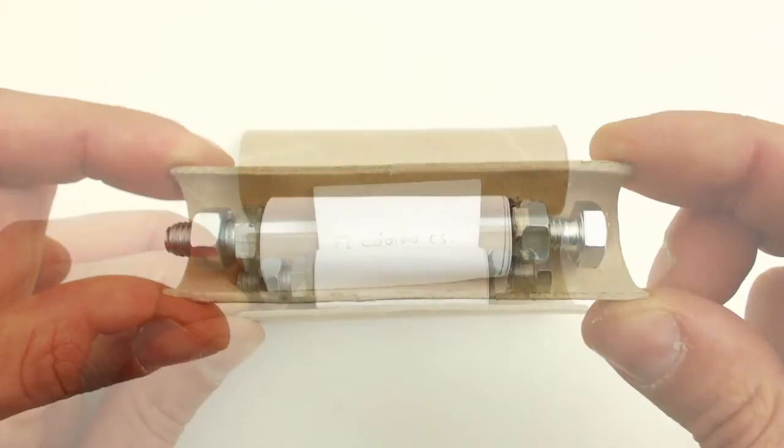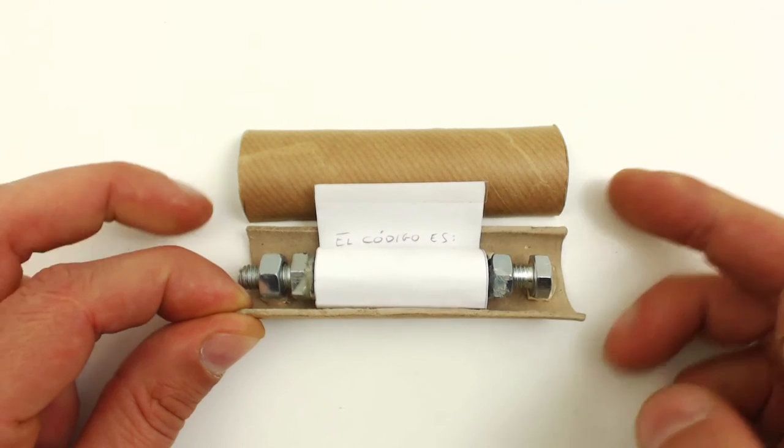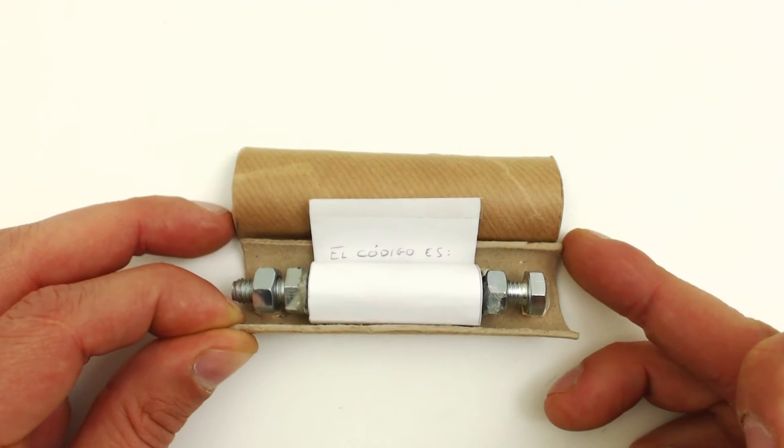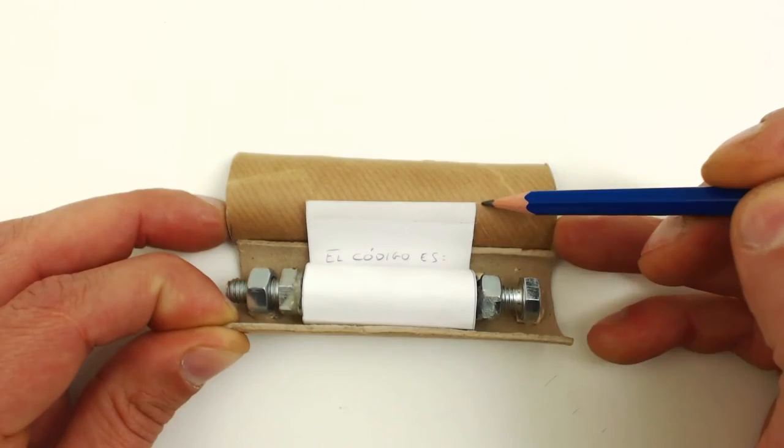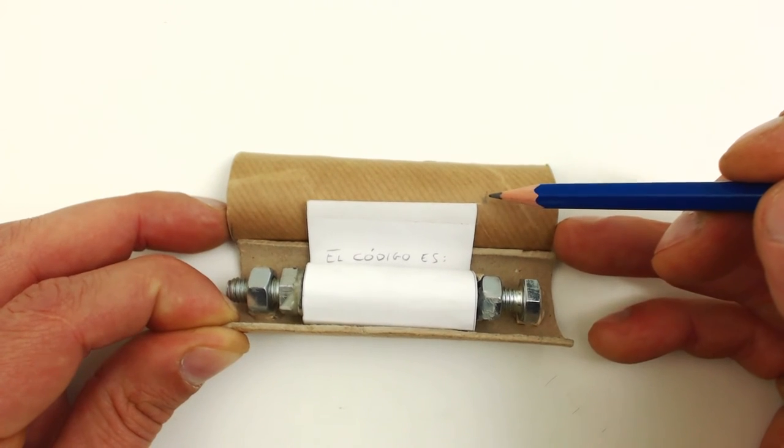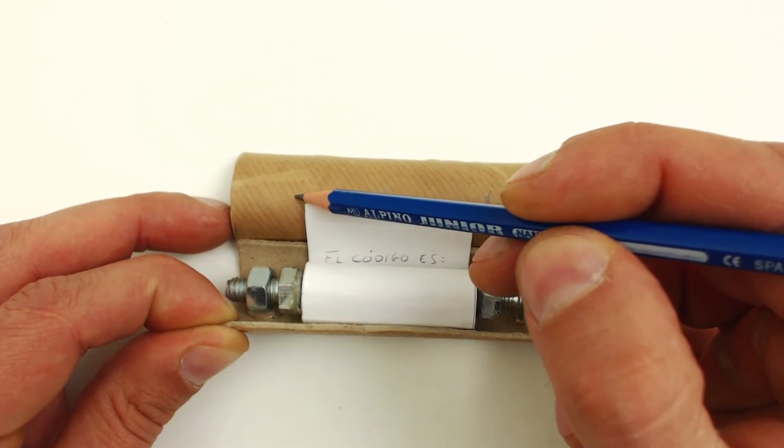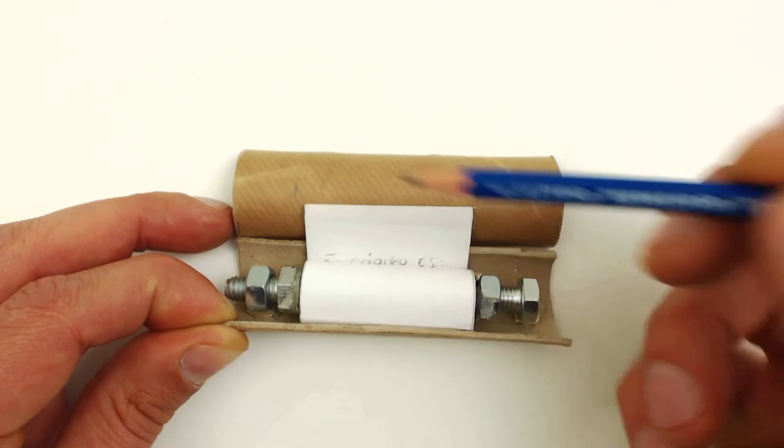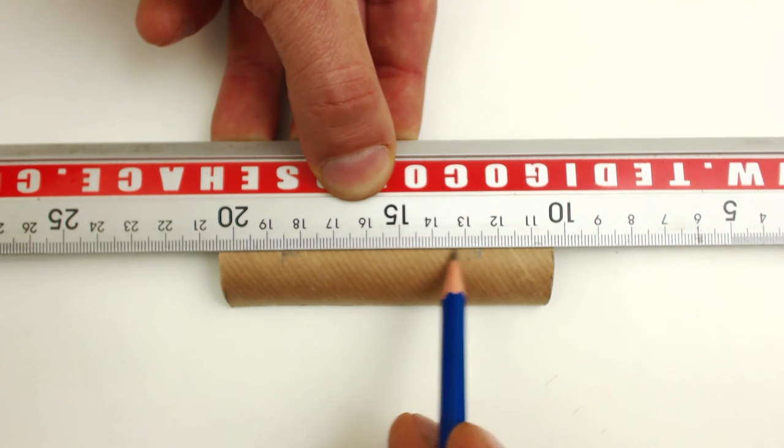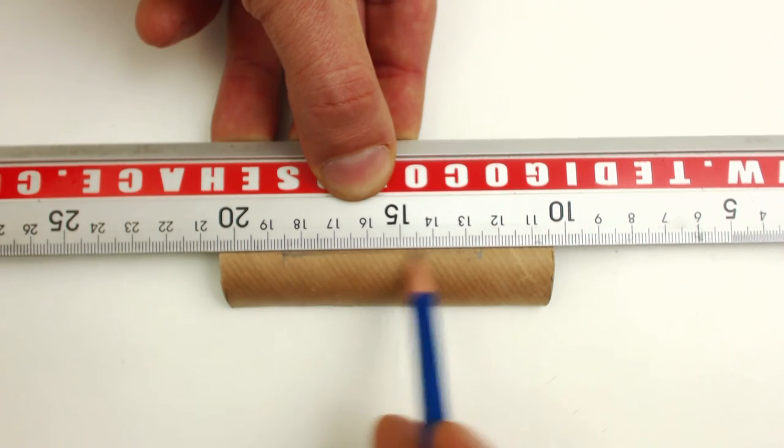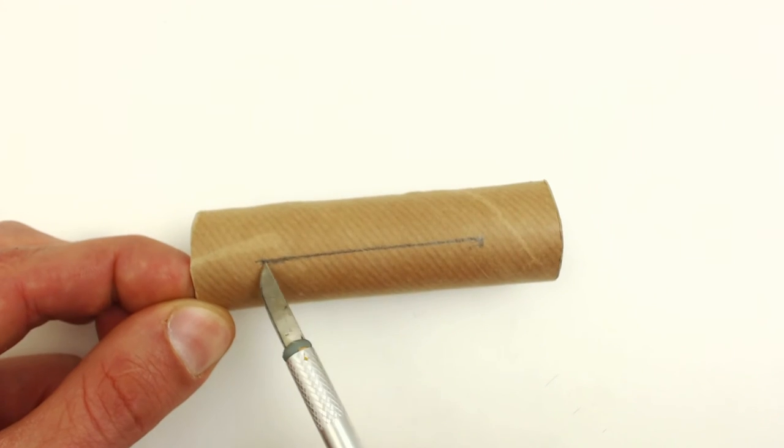The next step is to make a slip for your note to be placed. Mark the width onto the second piece of cardboard tubing using your actual note like so. Use the ruler to help you join the marks. With your cutter, make the slit.